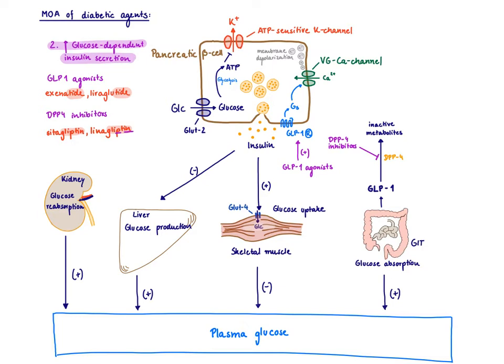The GLP-1 agonists all end in tides: exenatide, liraglutide.